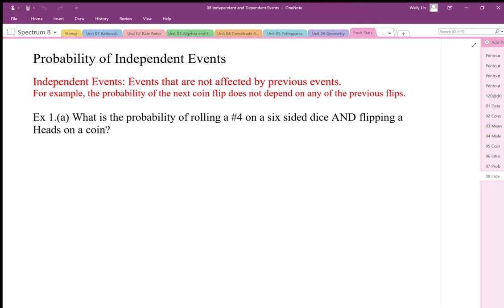So we're going to start looking at probability of independent events and just a reminder what independent events are. They are events that are not affected by previous events, so the probability of one event doesn't affect the probability of the next event.